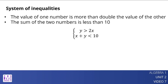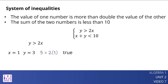There are many possible pairs of numbers that meet the first constraint. One example is x equals 1 and y equals 3, since 3 is greater than 2 times 1 is true. Another pair is x equals 4 and y equals 9, since 9 is greater than 2 times 4 is true.